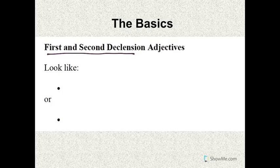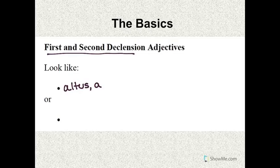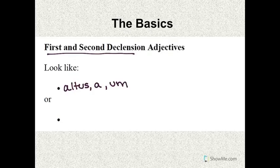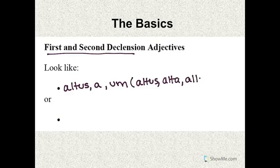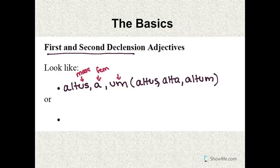The vast majority of them look like this: altus, a, um. Or if you want to spell it all the way out, altus, alta, altum. The us form is for the masculine. The ah is for the feminine. And the um is for the neuter.